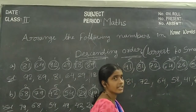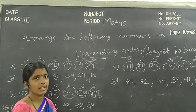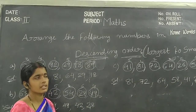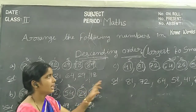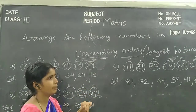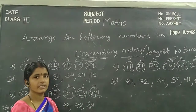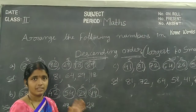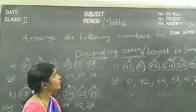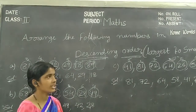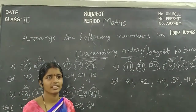Okay children, once again: Ascending order means smallest number to largest number, called ascending order. Descending order means largest number to smallest number, called descending order. Practice ascending order and descending order. Thank you, children.